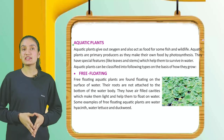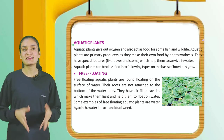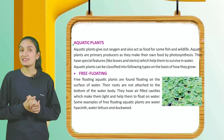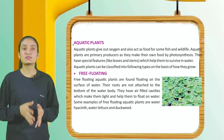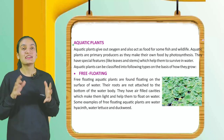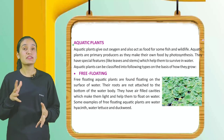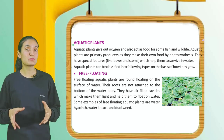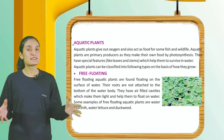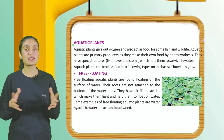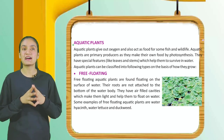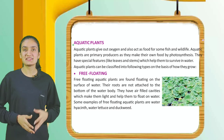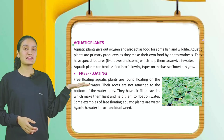Free floating: Free floating aquatic plants are found floating on the surface of water. Their roots are not attached to the bottom of the water body. They have air-filled cavities which make them light and help them to float on water. Some examples are water hyacinth, water lettuce, and duckweed.